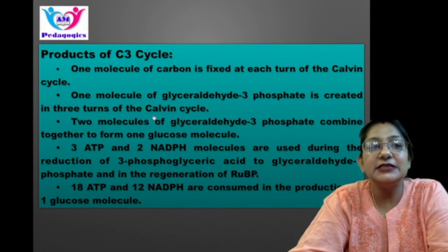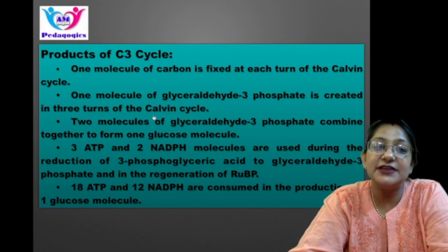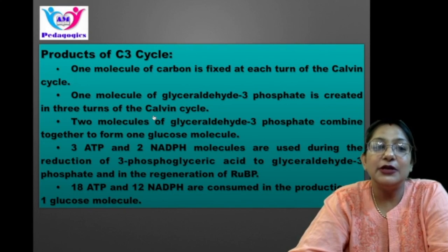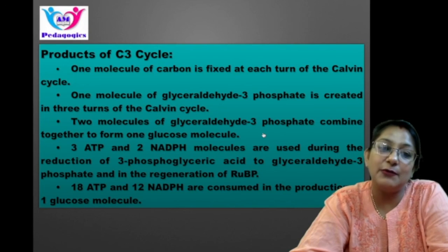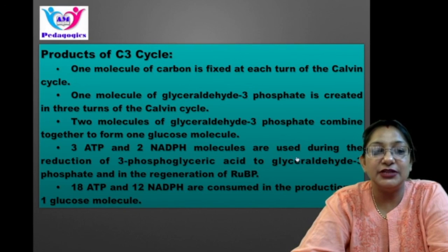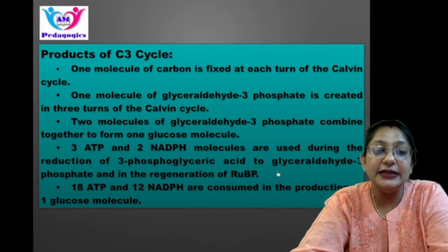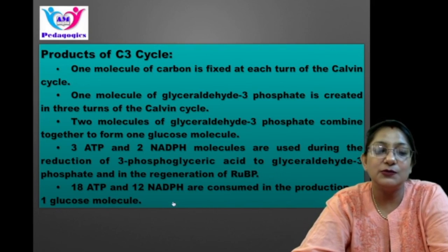Products of the Calvin cycle: one molecule of carbon is fixed at each turn of the cycle. One molecule of glyceraldehyde-3-phosphate is created in three turns of the Calvin cycle. Two molecules of glyceraldehyde-3-phosphate combine together to form one glucose molecule. Three ATP and two NADPH molecules are used during the reduction of three phosphoglyceric acid, two glyceraldehyde-3-phosphate, and in the regeneration of RuBP. Overall, 18 ATP and 12 NADPH are consumed in the production of one glucose molecule.